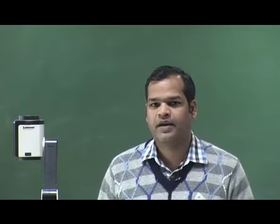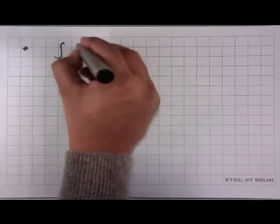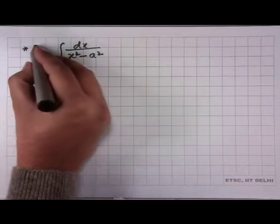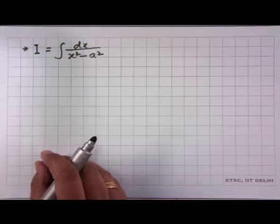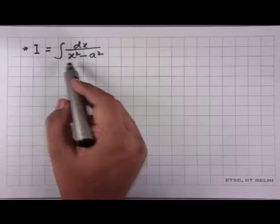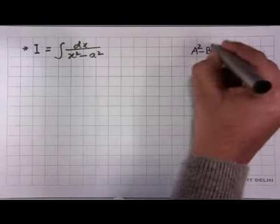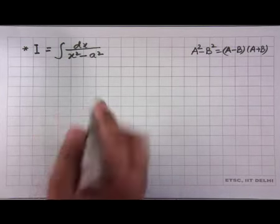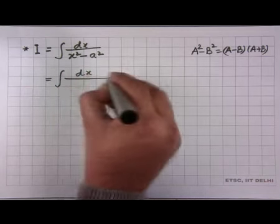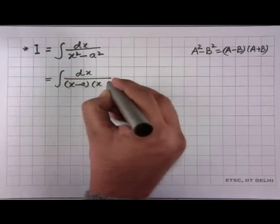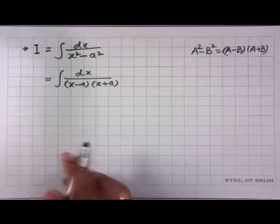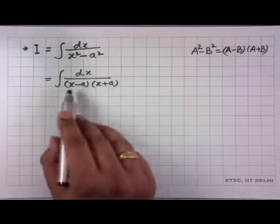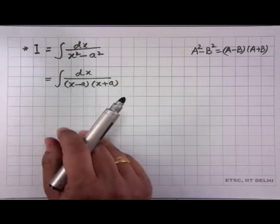Now we look at another kind of integral: ∫dx/(x²−a²). We wish to evaluate this integral involving a difference of two squares. The approach is to write the denominator as a product: (x−a)(x+a). Since both factors are linear, we can utilize the logarithmic formula if we break the integrand into linear terms.